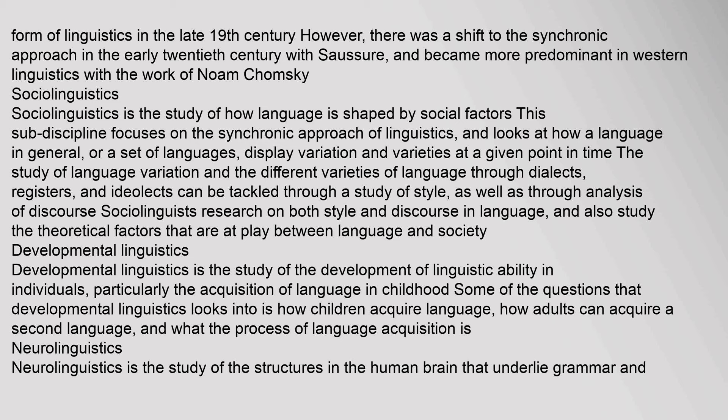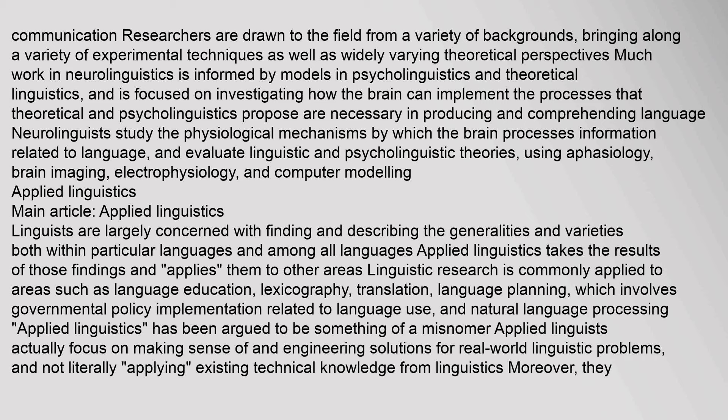Developmental linguistics is the study of the development of linguistic ability in individuals, particularly the acquisition of language in childhood. Questions developmental linguistics addresses include how children acquire language, how adults can acquire a second language, and what the process of language acquisition is. Neurolinguistics is the study of the structures in the human brain that underlie grammar and communication. Much work in neurolinguistics is informed by models in psycholinguistics and theoretical linguistics, and is focused on how the brain implements the processes necessary in producing and comprehending language. Neurolinguists study physiological mechanisms using aphasiology, brain imaging, electrophysiology, and computer modeling.